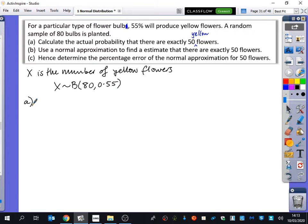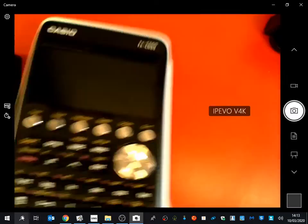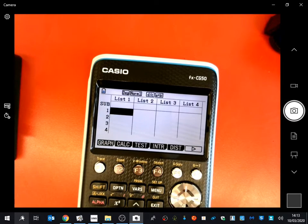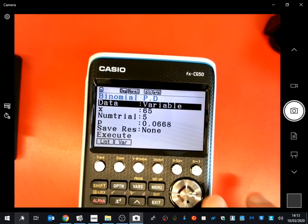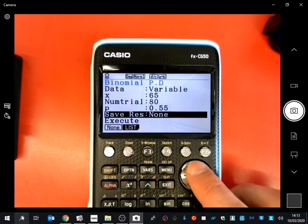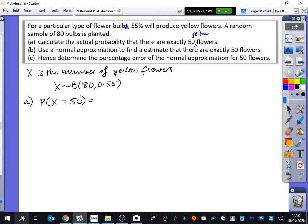The first thing it wants us to do is to calculate the actual probability that there are exactly 50. So what's the probability that X is equal to 50? Well, you would use your calculator. So you could go to your distribution, binomial. This one is going to be a probability distribution. We've got that there are 80 trials, the probability is 0.55, and we're interested in the probability of it being 50. So you've got 0.0365. Does that feel like a sensible probability? Yeah, because they could easily be 51 or 49, so exactly 50 is quite specific.